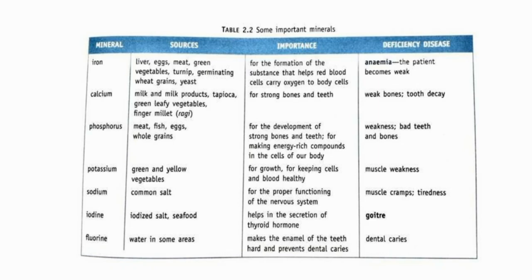Next is sodium. The main source is common salt. Its importance is for the proper functioning of the nervous system. Deficiency can cause muscle cramps and tiredness. Next is fluorine, found in water in some areas. It makes the enamel of the teeth hard and prevents dental caries. Deficiency may cause dental caries.